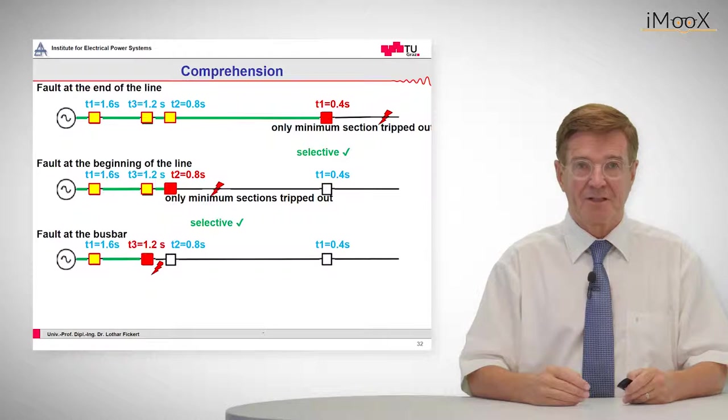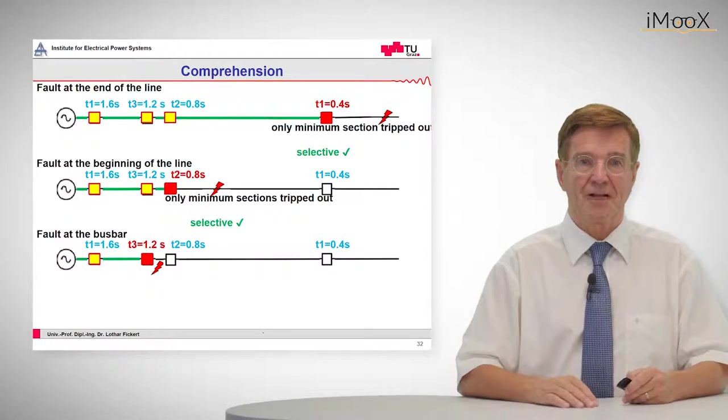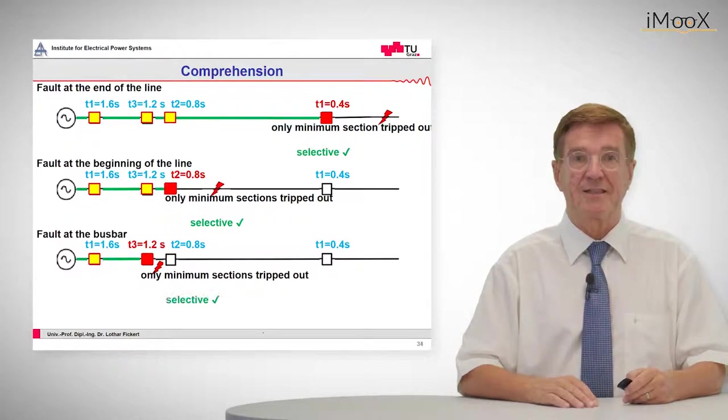The last one is fault at the bus bar. We see that the low voltage side overcurrent protection of the transformer has tripped out and again only minimum sections are tripped out and that is selective.